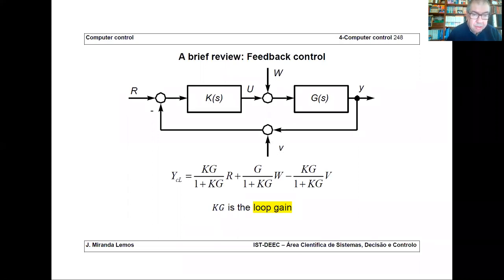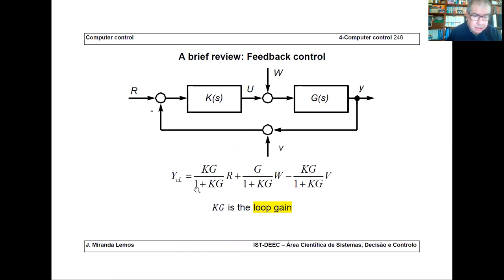We have these three inputs v, w, and r, and one output. You can compute the transfer functions relating each of the inputs to the output using the superposition principle. The output in closed loop in the transform domain is given by one, two, three closed loop transfer functions that filter the reference, the disturbance, and the noise.